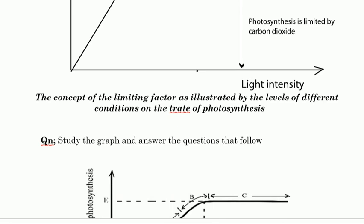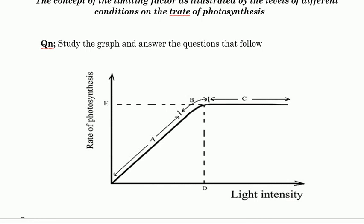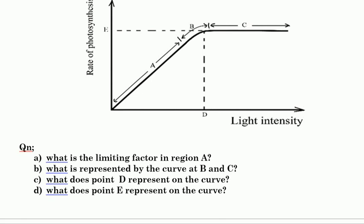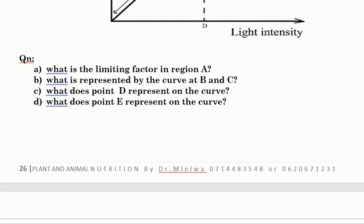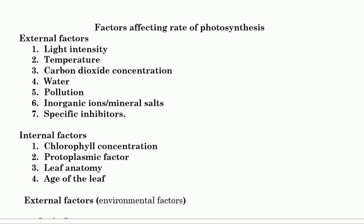That is all about the concept of the limiting factor. The graph referenced is the one from the notes above, and students are encouraged to study the graph and answer the questions that follow — the questions are present in the biological science book with answers provided. That is the end of this lecture on the concept of limiting factor. In the next lecture we shall discuss the internal and external factors affecting the process of photosynthesis. Please subscribe to the channel, share the link with your fellows, and click the link below to join the Telegram group for more discussions and updates.